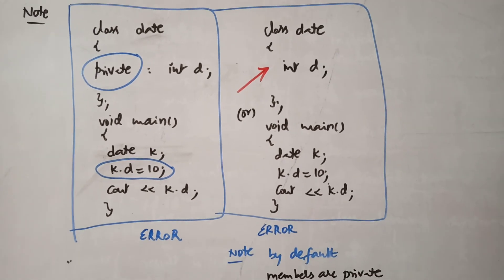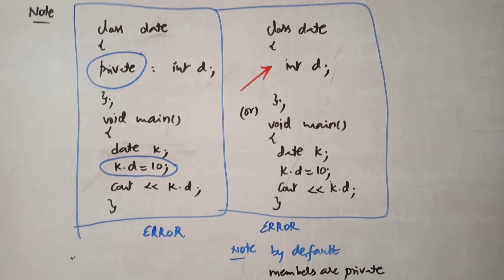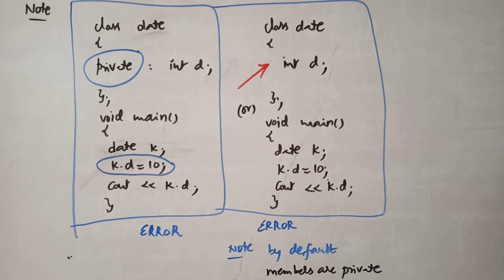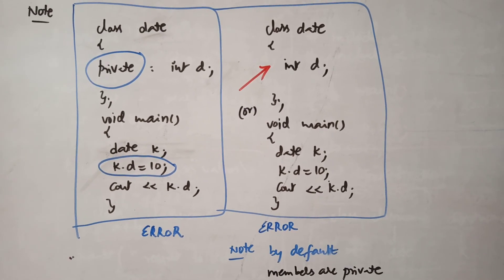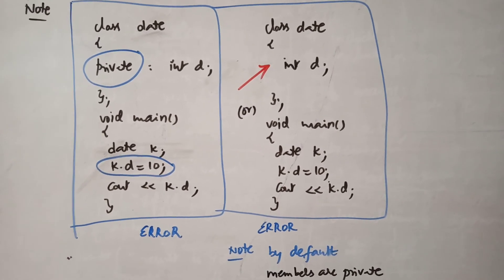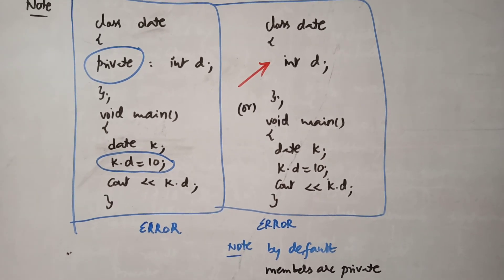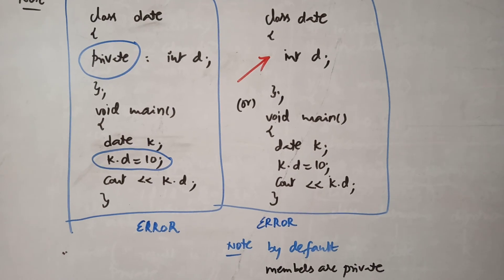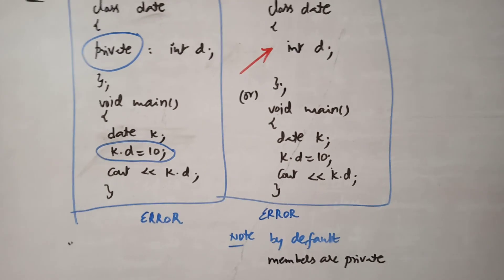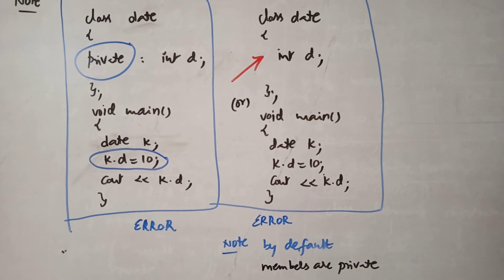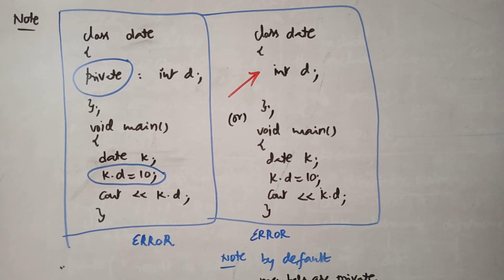And the most important thing is, by default members are private. Look at the second one. Error mark. I didn't specify it as private or public. Even if you don't specify it as private or public, it will take it as private only. So by default members are private. It will be referred to here.